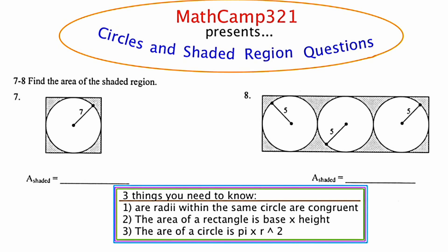The first thing you need to know is that all radii within the same circle are congruent. The second thing is that the area of a rectangle is found by multiplying the base times the height. And the third thing is that the area of a circle is found by multiplying pi times r squared.